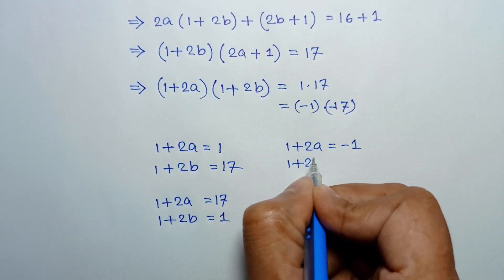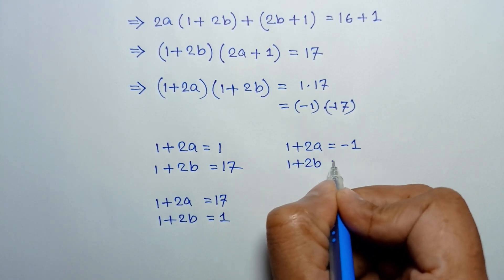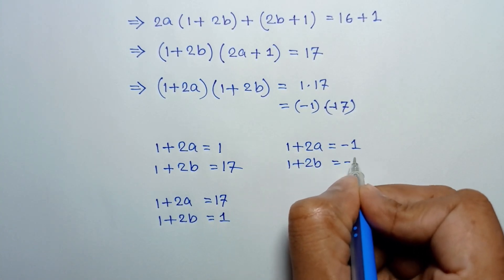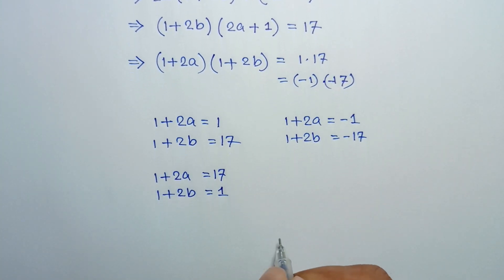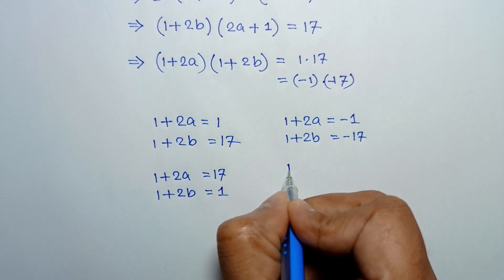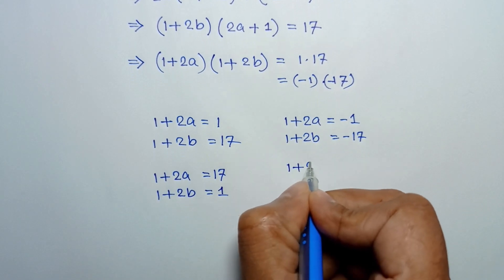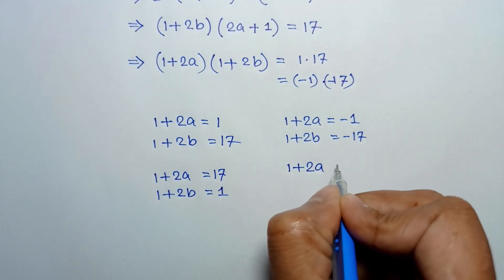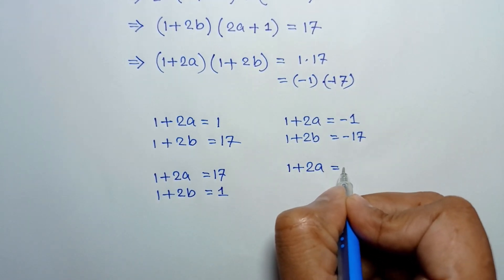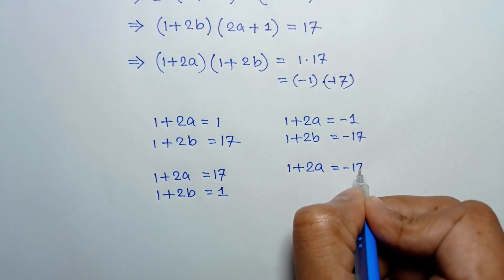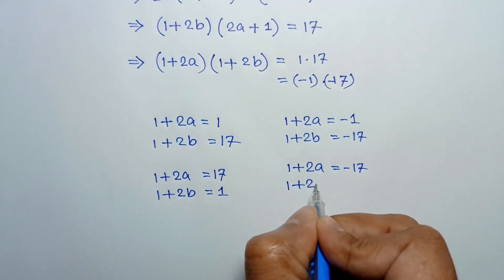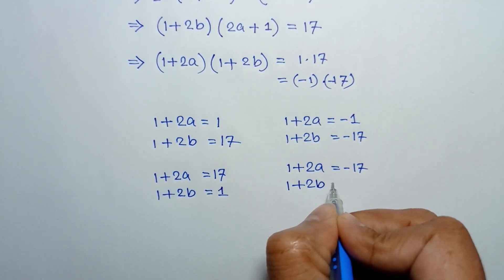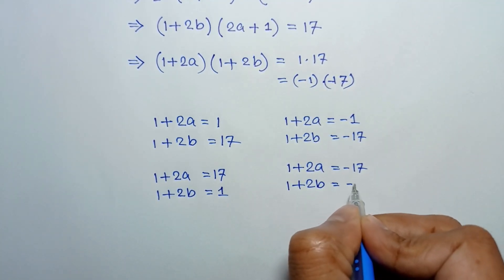For the negative case: 1 plus twice a is equal to negative 1 and 1 plus twice b is equal to negative 17, or 1 plus twice a is equal to negative 17 and 1 plus twice b is equal to negative 1.